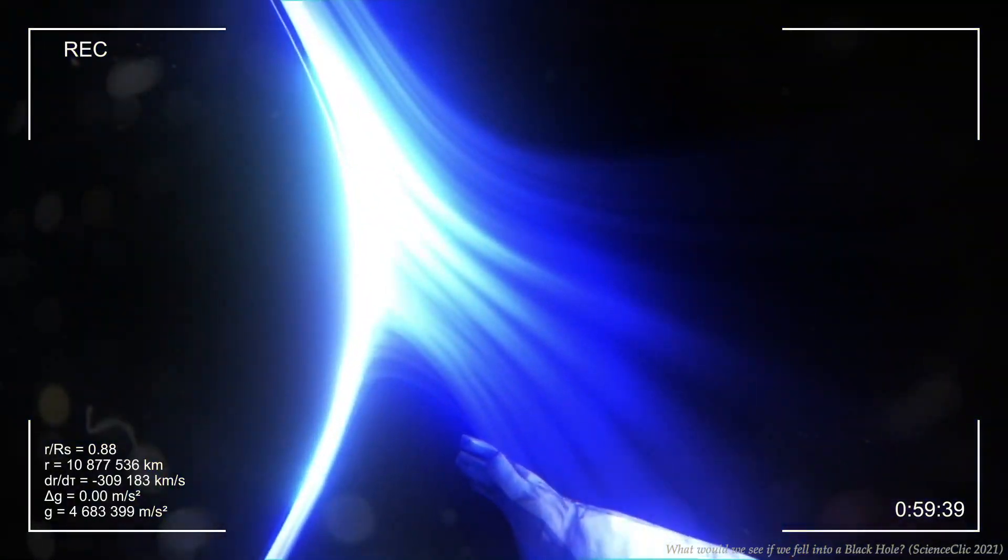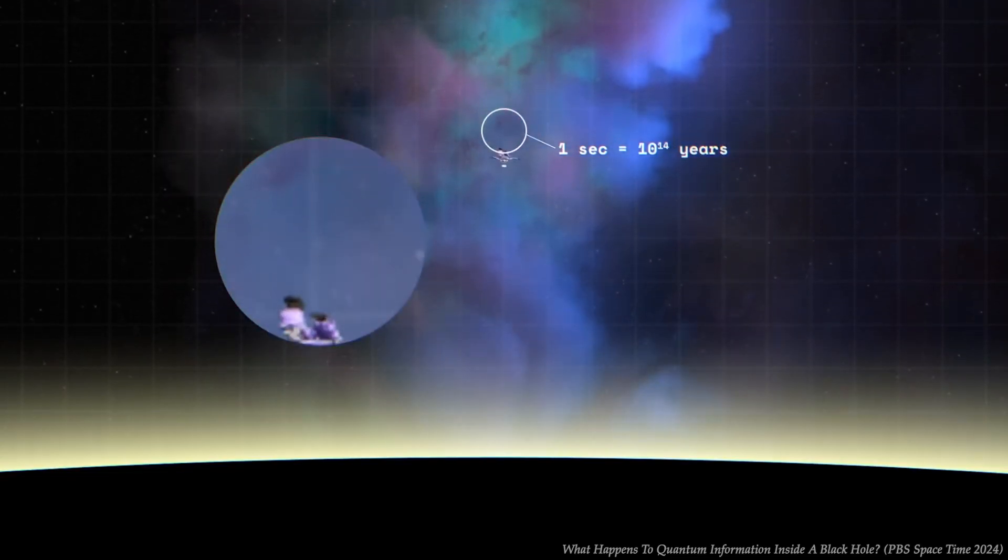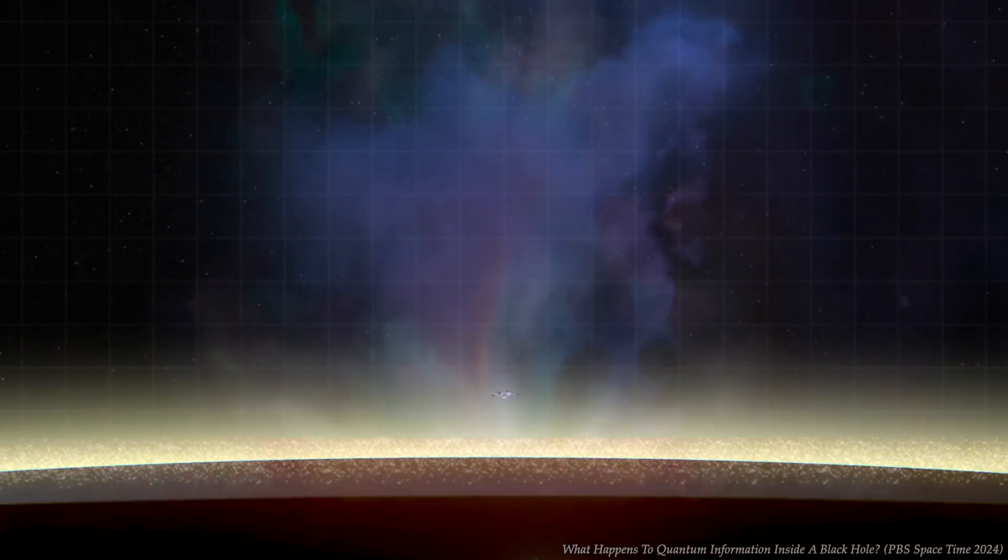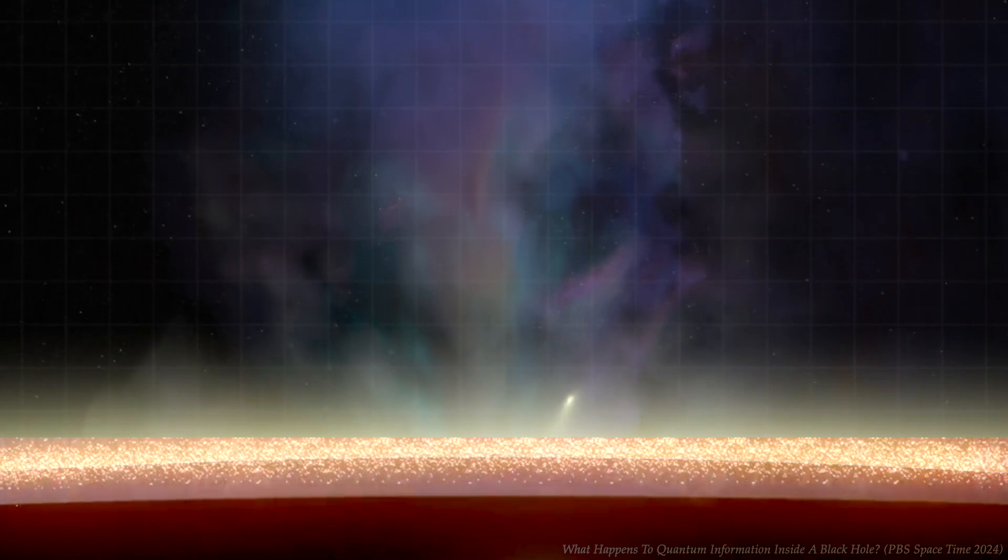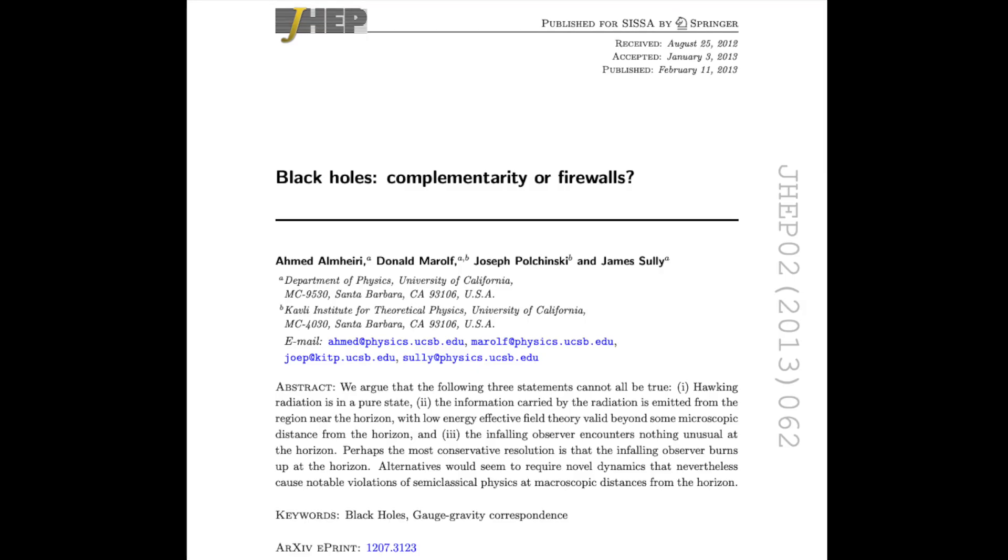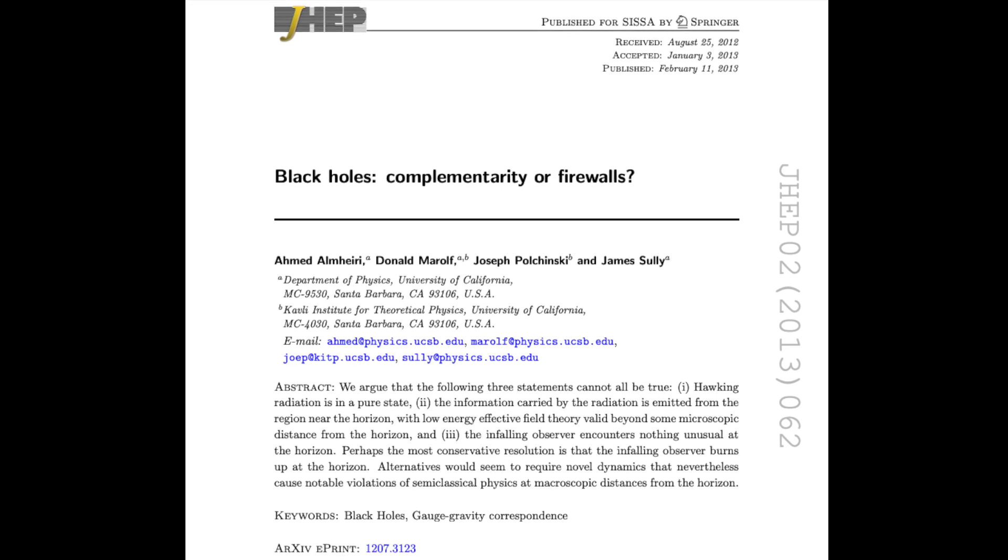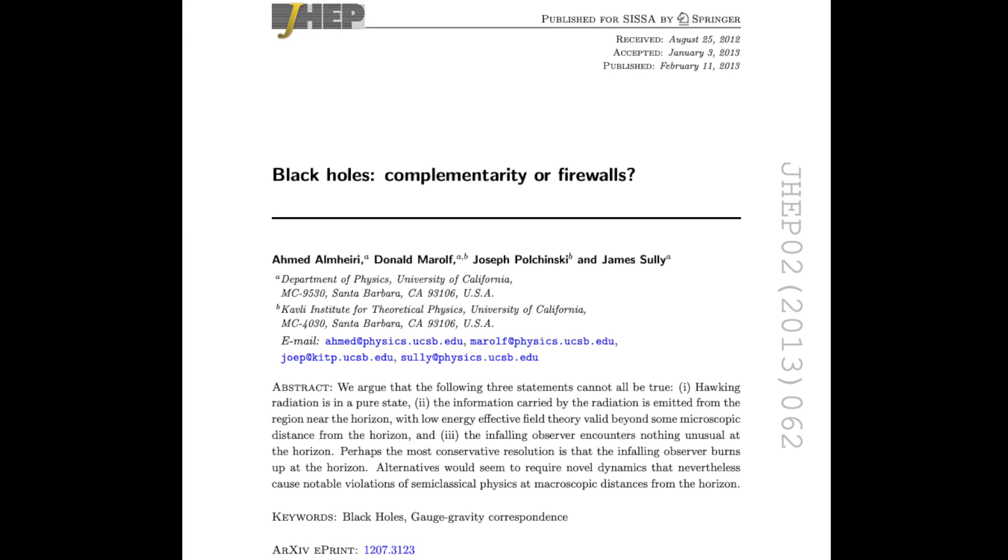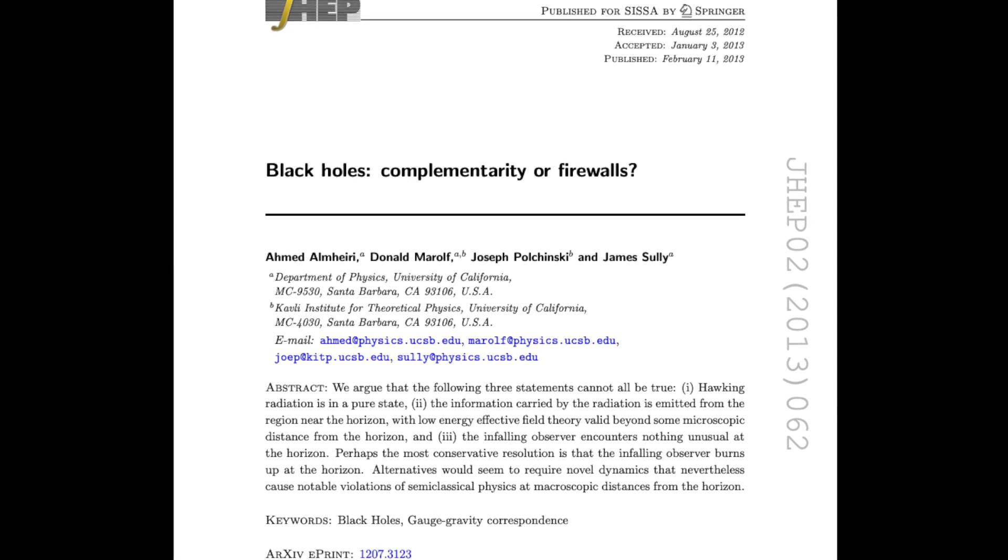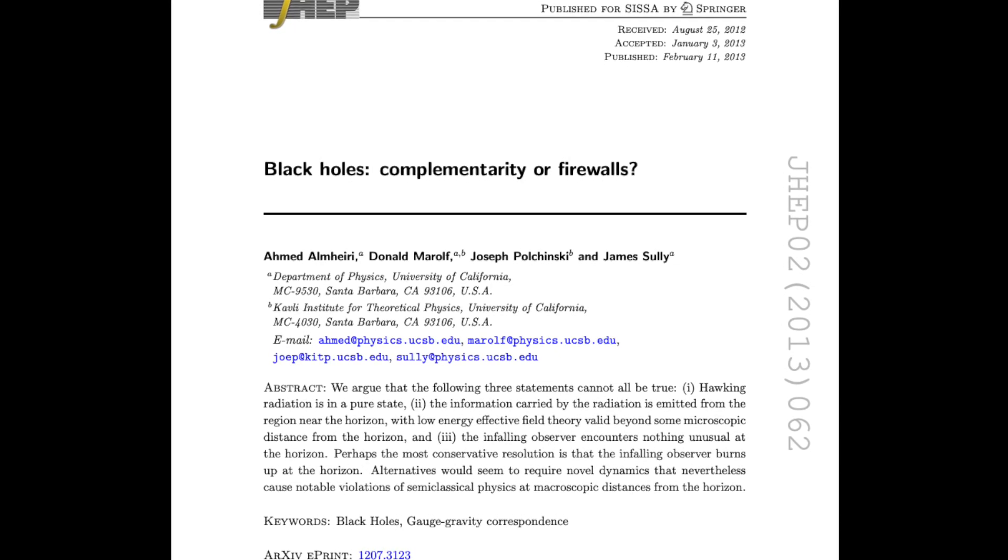Imagine, once again, approaching a black hole, expecting a smooth passage into the void. Instead, you face a wall of searing energy that shatters our current understanding of physics. The firewall hypothesis emerged from a groundbreaking 2012 argument presented by physicists Almeri, Merolf, Polchinski, and Sully, collectively known as AMPS.